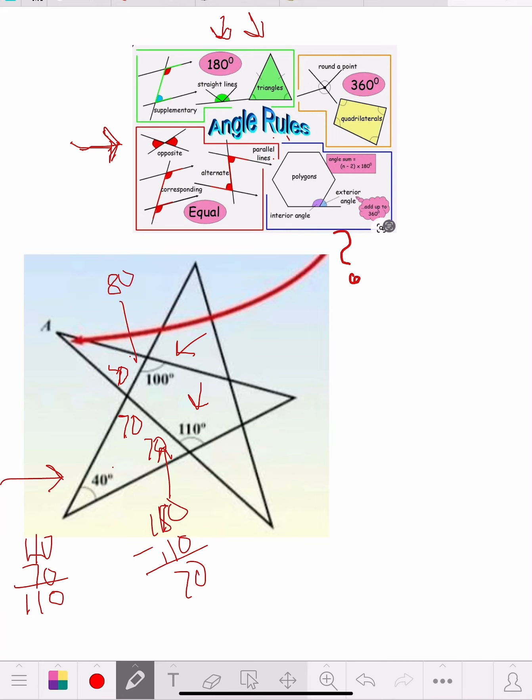So now inside that triangle we already got two of them, we got a 70 and we got an 80. I'm going to write it over here to look better: 70 and we got an 80. So what's that? That's 150.